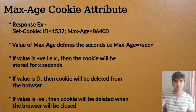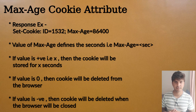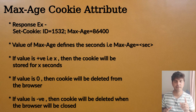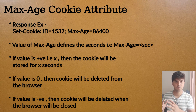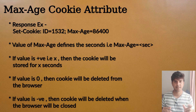For example, if the max age value has been set to 86400 — which is the equivalent number of seconds in a day — that means the browser will store the cookie for one day. So if the value is positive, the cookie will be stored in the browser until that number of seconds has elapsed.